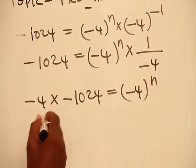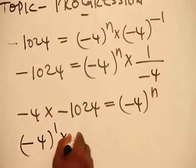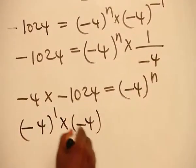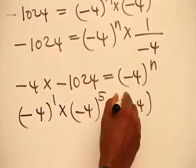Looking at this, this is minus 4 raised to the power 1 times minus 4 raised to the power 5 is equal to minus 4 raised to the power n.